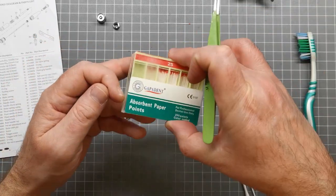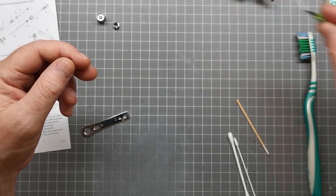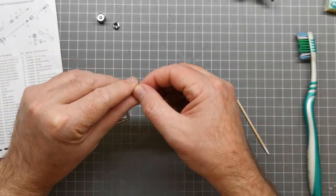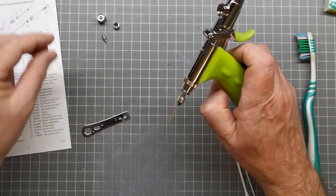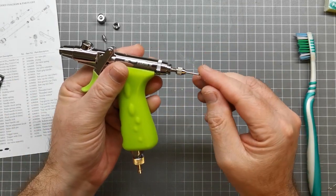I find that works really well. These paper points, you can get them on eBay or AliExpress. They're not particularly expensive. Okay, so take the nozzle out after a good clean.